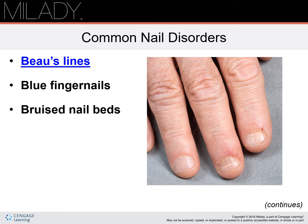Next, we have blue fingernails. This is usually caused by a lack of circulating oxygen in the red blood cells. It may also represent a high level of an abnormal form of hemoglobin in the circulation. Next, bruised nail beds is a condition in which a blood clot forms under the nail plate, causing a dark purplish spot. This is usually due to small injuries to the nail bed.